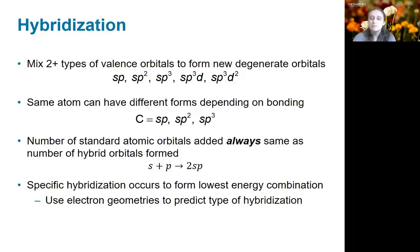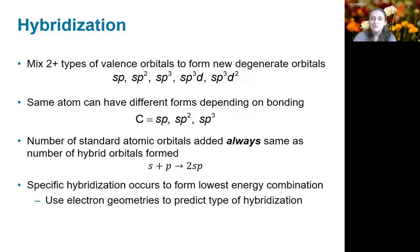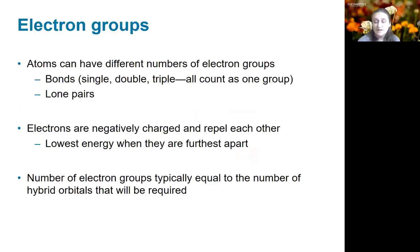Hybridization is more general and there are many variations of hybrid orbitals that can be formed. The specific hybrid orbitals formed are those that create the lowest energy geometry. The same atom can have different forms of hybridization depending on its bonds and what it's connected to. A popular example is the carbon atom, which can be sp, sp2, or sp3 hybridized. An important point is that the number of hybrid orbitals is always the same as the number of atomic orbitals mixed in. For this class, the specific hybridization is determined by the number of electron groups around an atom — either bonds or lone pairs — and any bond, whether single, double, or triple, counts as a single group.